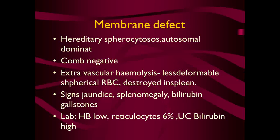Now, membrane defects. The commonest example is hereditary spherocytosis, an autosomal dominant disorder. It is Coombs-negative and hemolysis is extravascular. The spherocytes have poor capability of passing through blood vessels and are less deformable. Therefore on repeated attempts while passing through capillaries they get attached to the endothelial membrane, get damaged and lysed, and are finally destroyed in the spleen.